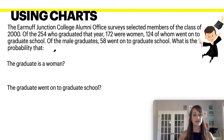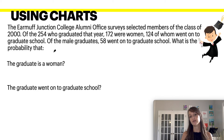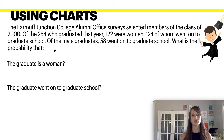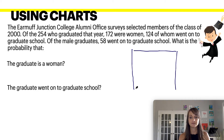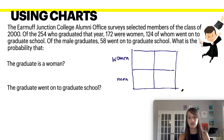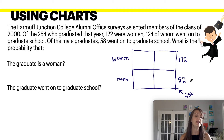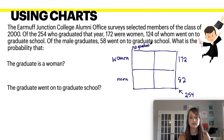Using a chart: the Irma Junction College Alumni Office surveys selected members of the class of 2000. Of the 254 who graduated, 172 were women, 124 of whom went on to graduate school. Of the male graduates, 58 went on to graduate school. Organizing this into a chart: we have women and men, with totals. There were 172 women, which means 82 men graduated, and they either did or did not go to graduate school.